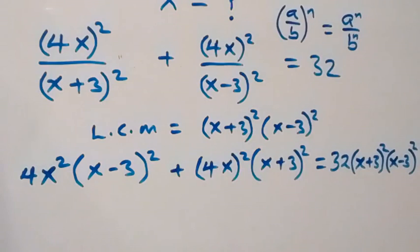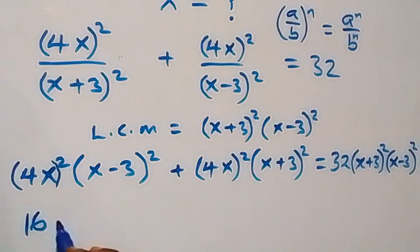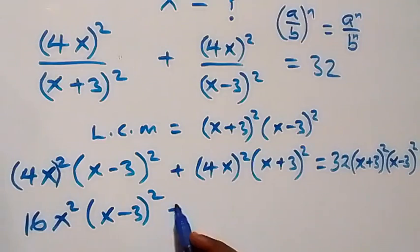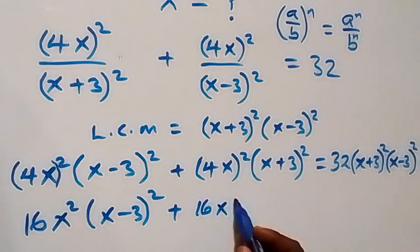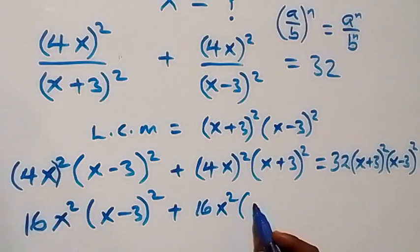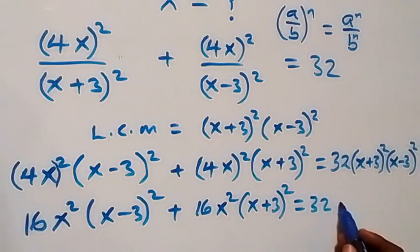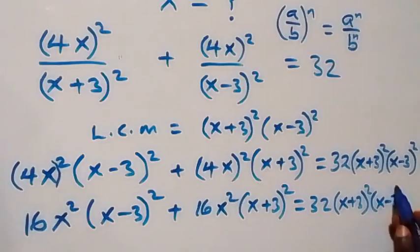Everything is being squared, so 4x squared gives us 16x². We have 16x² into bracket (x-3)², plus 16x² into bracket (x+3)², equals 32 into bracket (x+3)² times (x-3)².